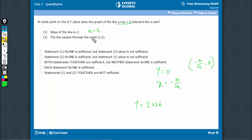It doesn't tell the value of b, and therefore statement 1 is not sufficient. Come to statement 2. The line passes through the point 1, 3.